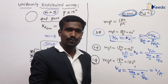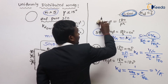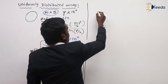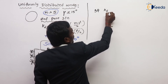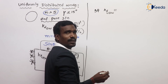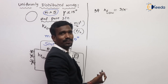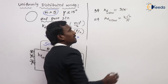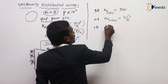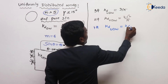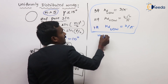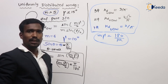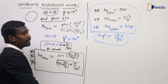In conclusion, for uniformly distributed winding: the distribution factor for a 3-phase machine is 3/π; for a 2-phase machine it is 2√2/π; and for a single-phase machine it is 2/π. This is because mγ = 180/number of phases. From this, we can calculate directly without needing the full formula.